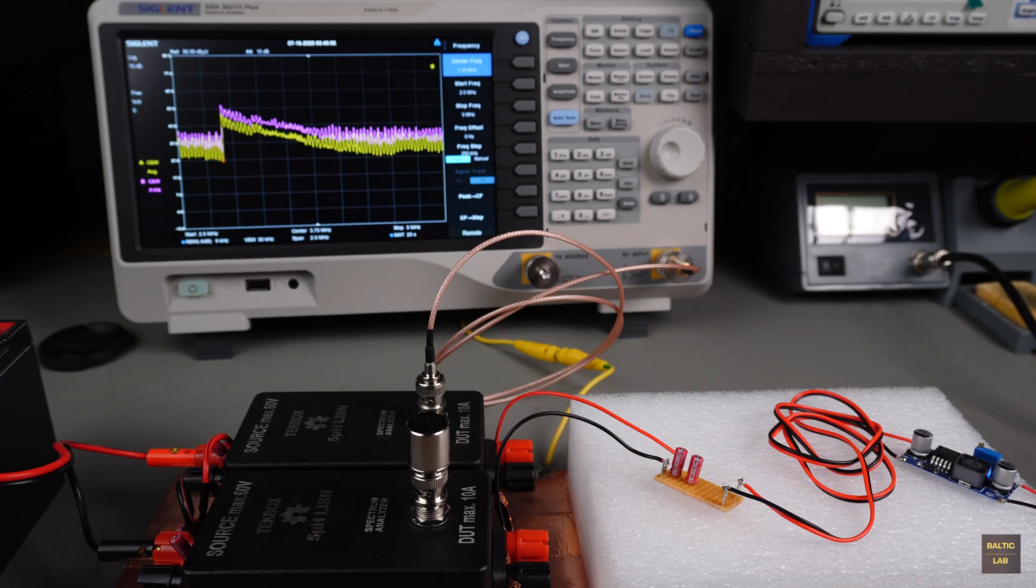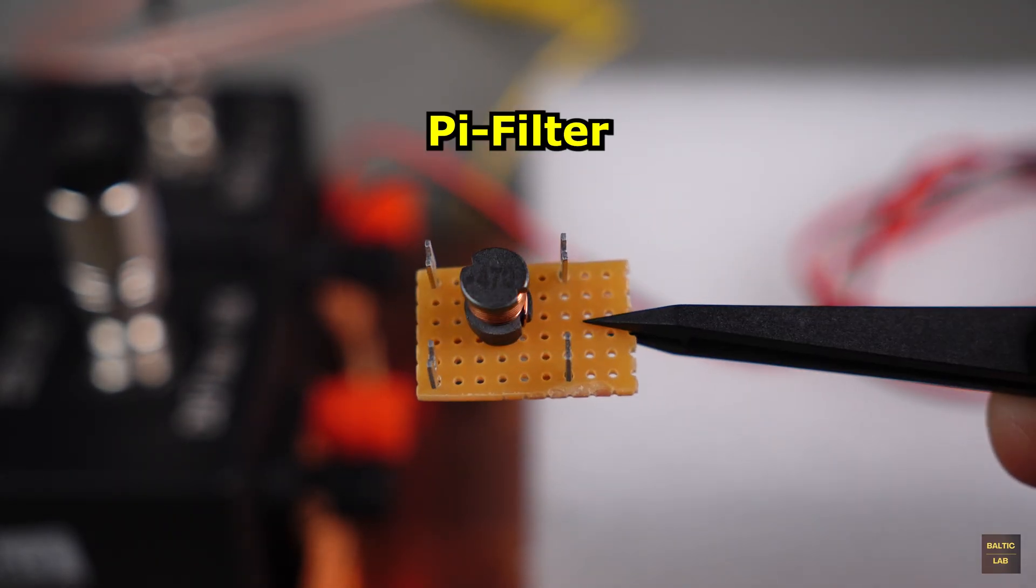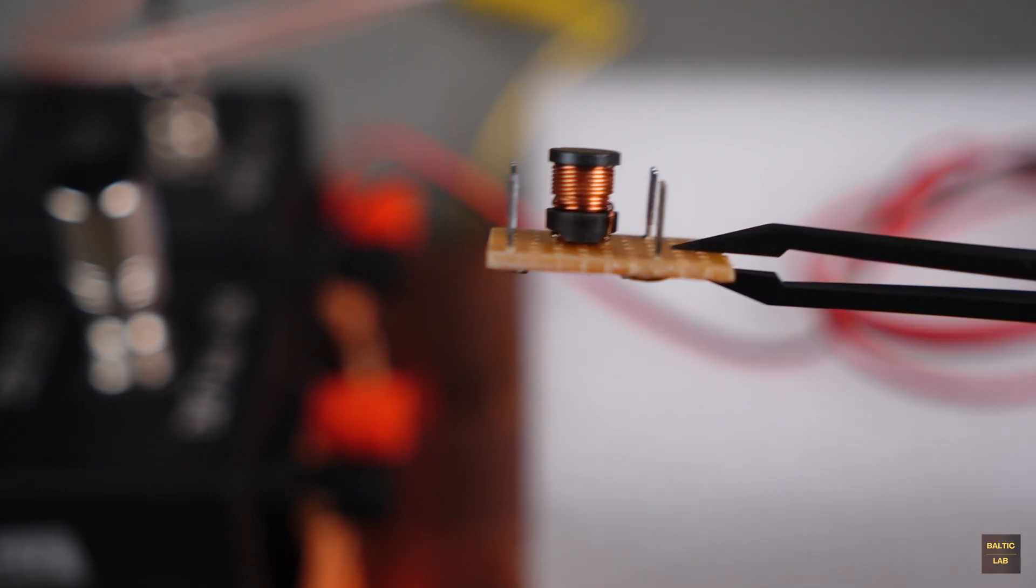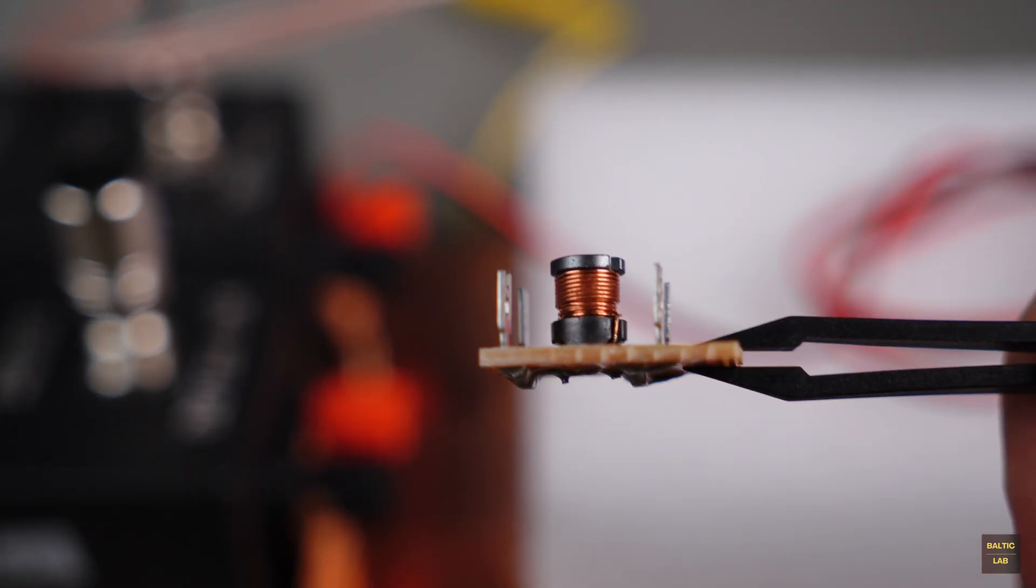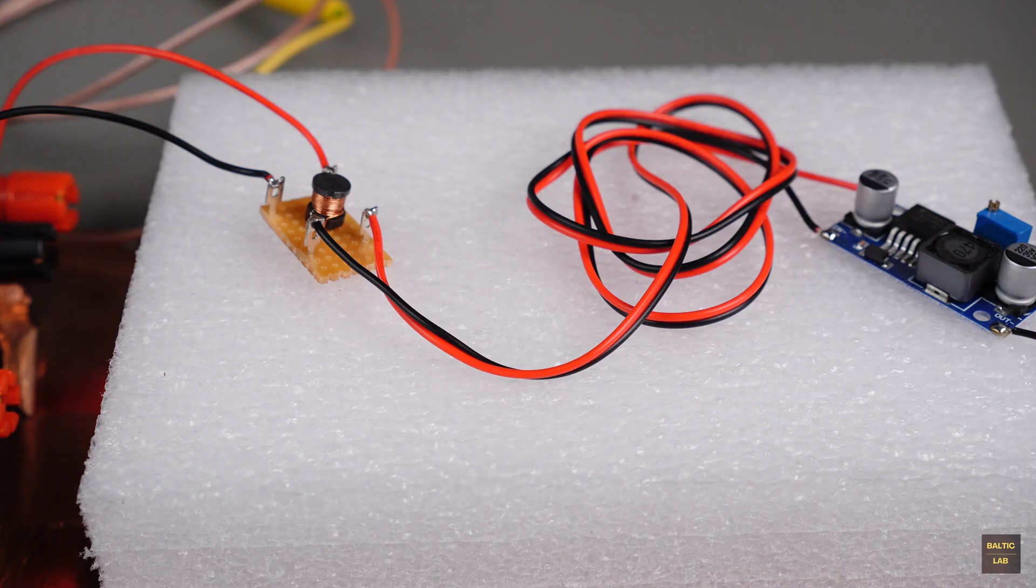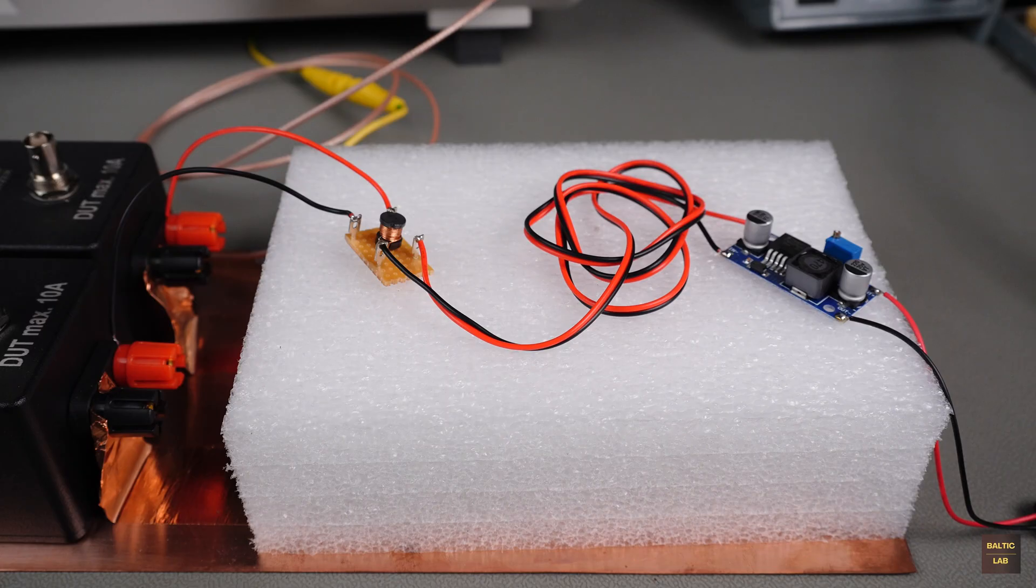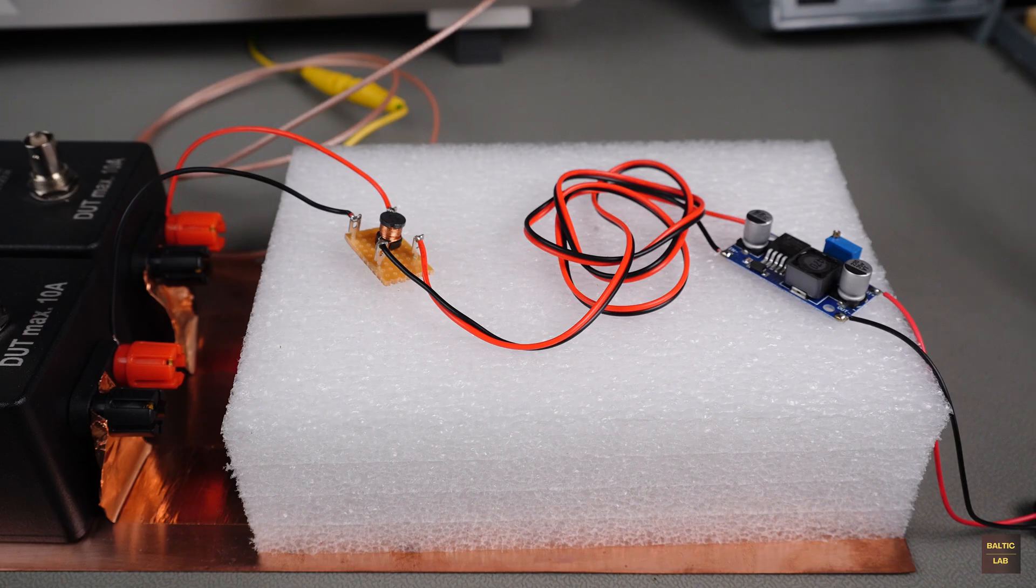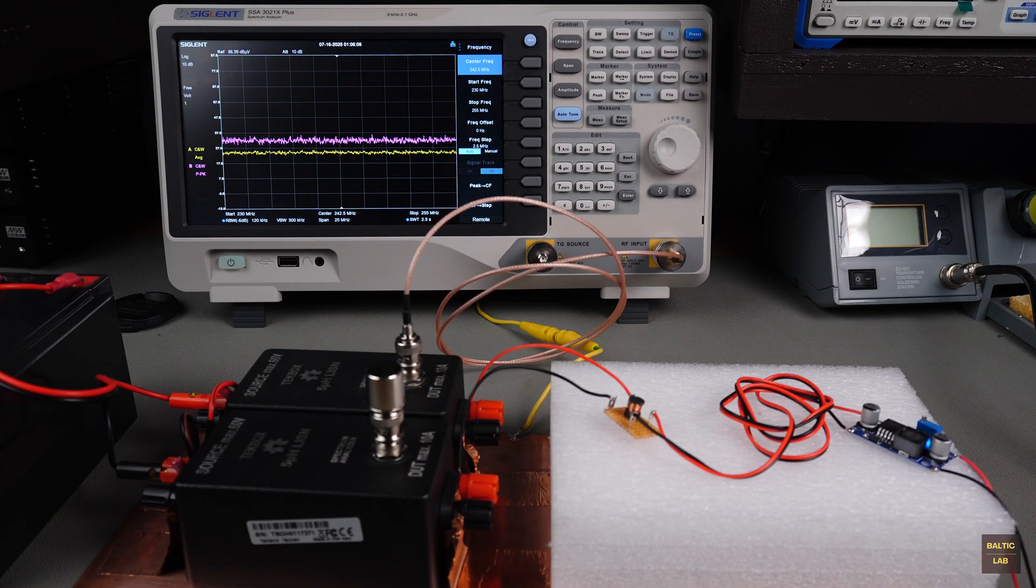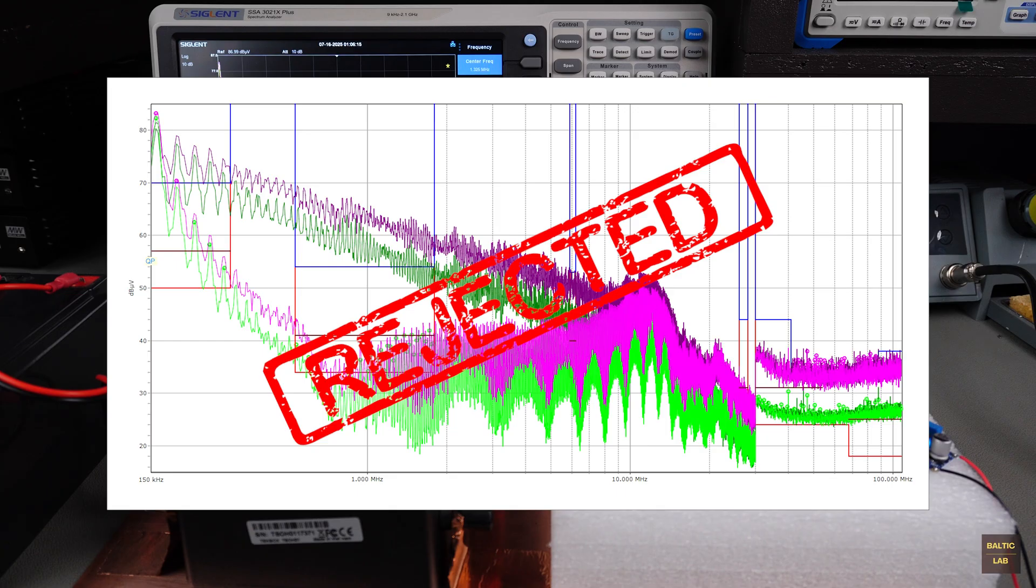A slightly better idea is to insert a pi filter into the supply line. The pi filter shown here consists of a 47 µH inductor and two 150 µF capacitors located on the underside of the board. This results in a cutoff frequency of around 120 kHz. The filter replaces the previously tested decoupling capacitors and is again placed between the LISENs and the converter. And the measurement is repeated. Compared to the capacitors, this shows much better attenuation at lower frequencies, but still not full compliance with the limits.